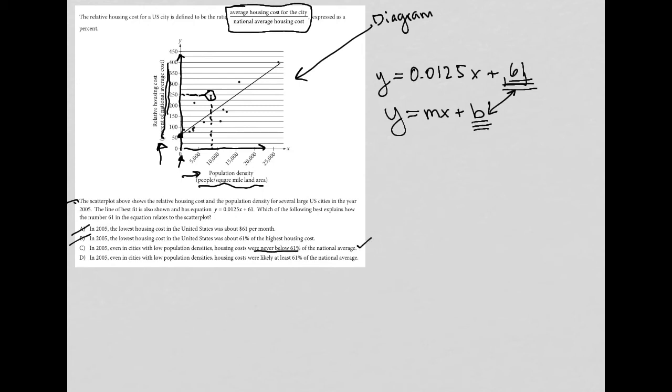Then choice D: in 2005, even in cities with low population densities, housing costs were likely at least 61% of the national average. I like D better than C. As much as initially when I read C, I felt like the use of 'never below' was fine, because of practice on this test, when I look at choice D and see it's pretty much the exact same answer except for 'never below' versus 'likely at least'—so likely at minimum the 61%—I'm going to always choose the more general answer than the more specific answer, just because that's how the test is written.